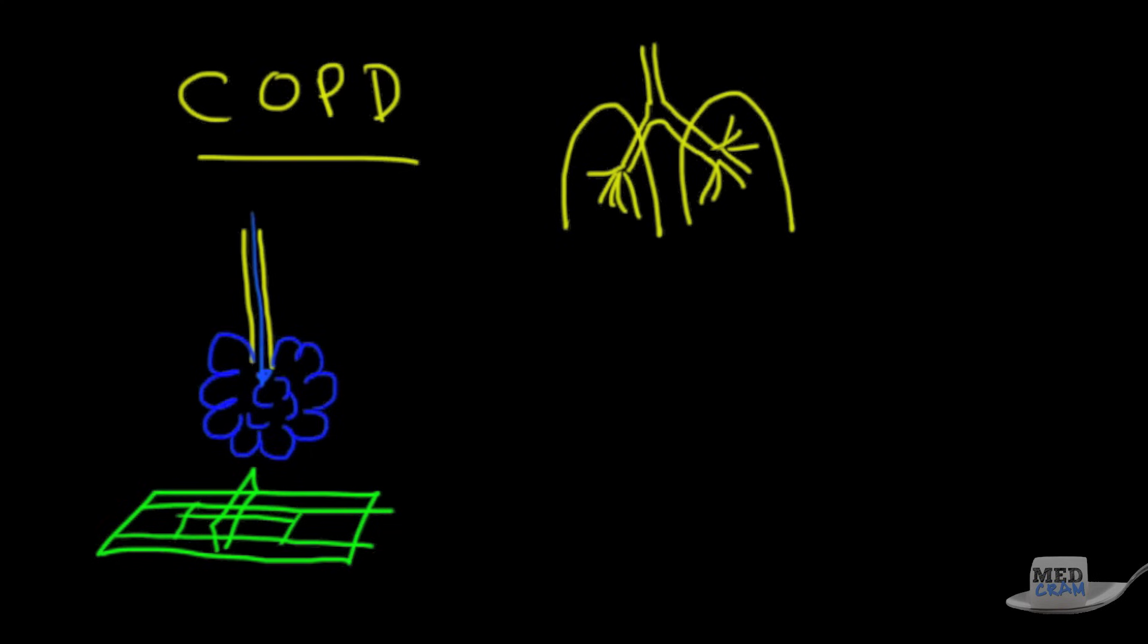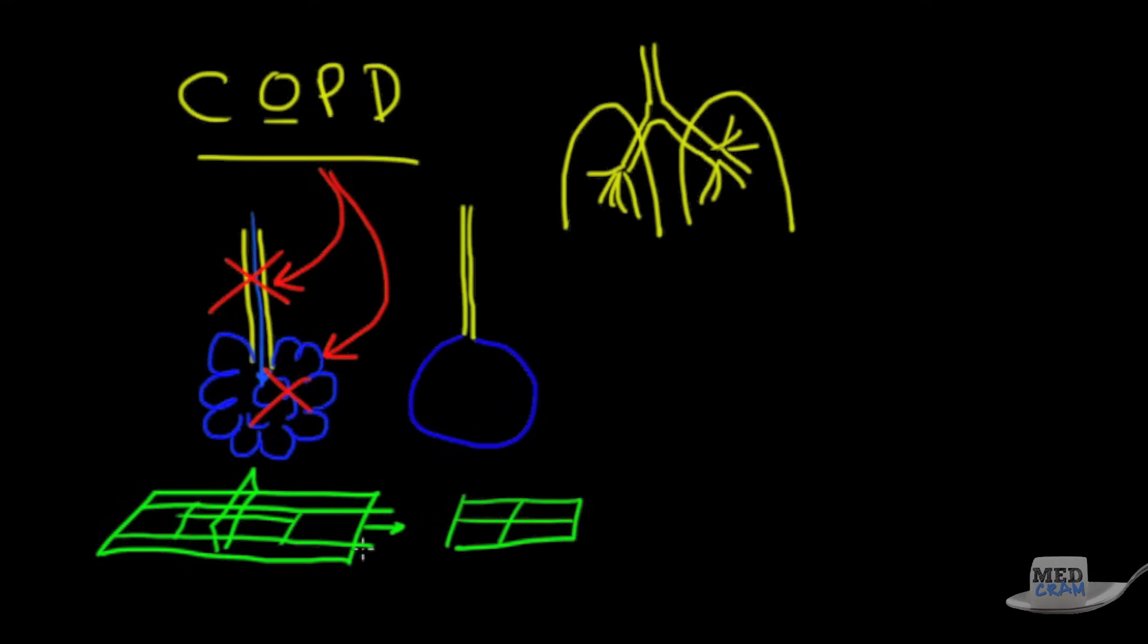These bronchioles, of course, allow the air that you breathe in to go down and cause gas exchange. Now COPD affects two main areas. It affects the small bronchioles, and it also affects the alveolus in a bad way. What happens is because the elastic fibers are destroyed, that airway becomes very collapsible and essentially it becomes very small. And that's where the obstruction in COPD comes from. Furthermore, you're also going to get destruction of the alveoli and you lose a lot of surface area. So instead of having a nice tennis court, you end up with maybe a badminton court or even a table tennis court. So this surface area becomes much smaller.